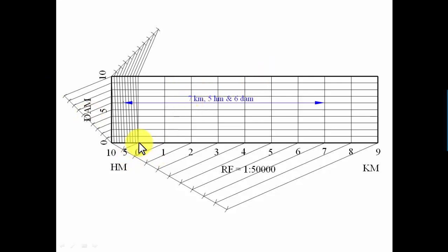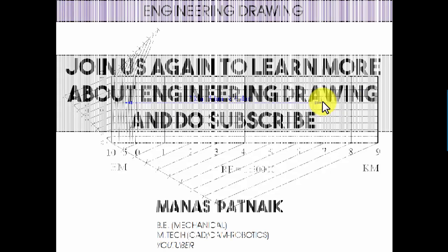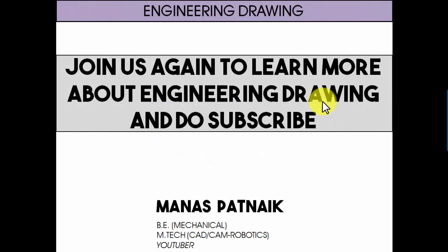We were supposed to indicate a distance of 7 kilometers, 5 hectometers, and 6 decameters. From the 0 mark, count 7 kilometers to the right, then 5 hectometers, and then 6 decameters — reading 1, 2, 3, 4, 5, 6 — and mark the final point. That's the indicated distance. If you liked the content, give it a thumbs up and recommend this channel to your friends. This is Manas Patnaik signing off — take care, have a great day, and keep drawing.